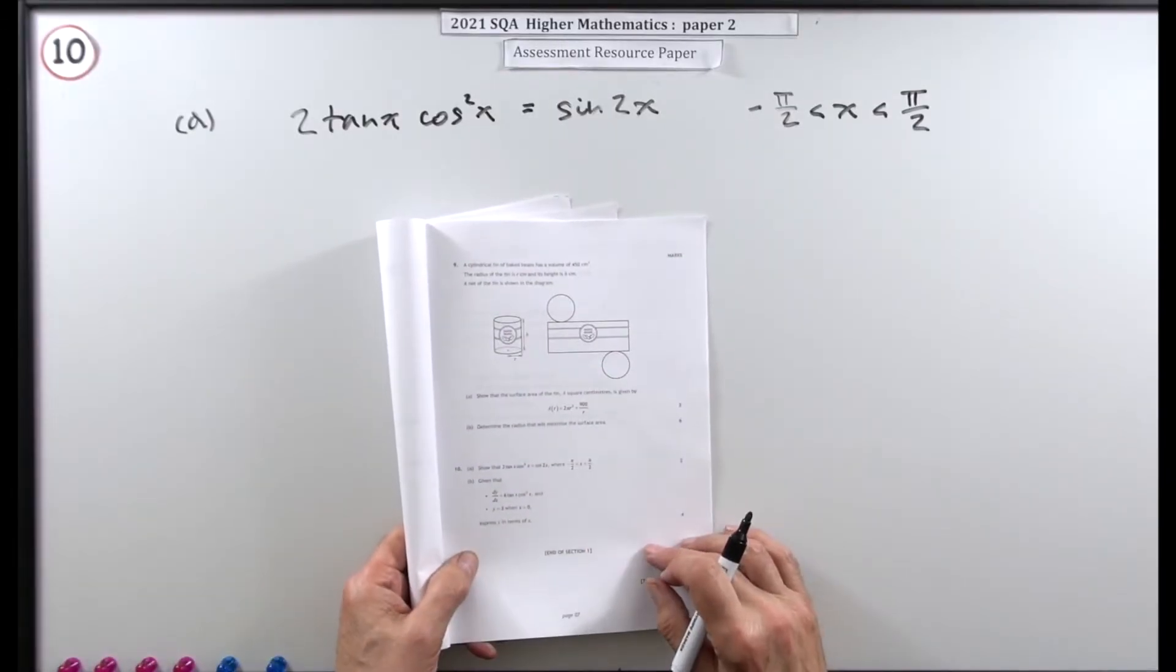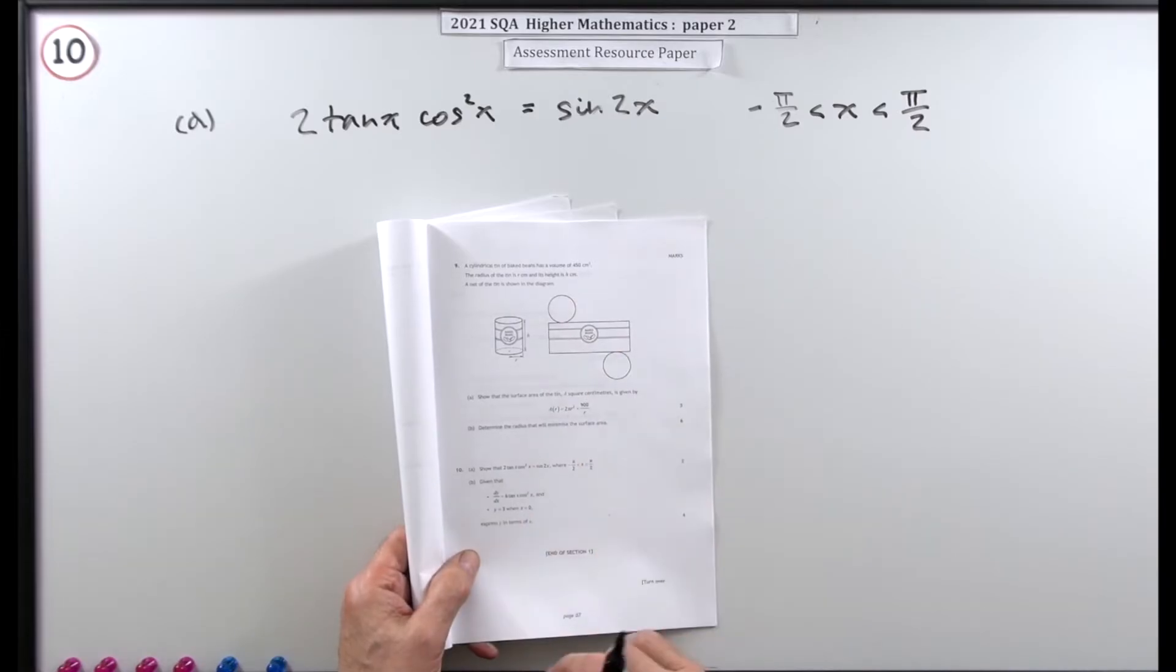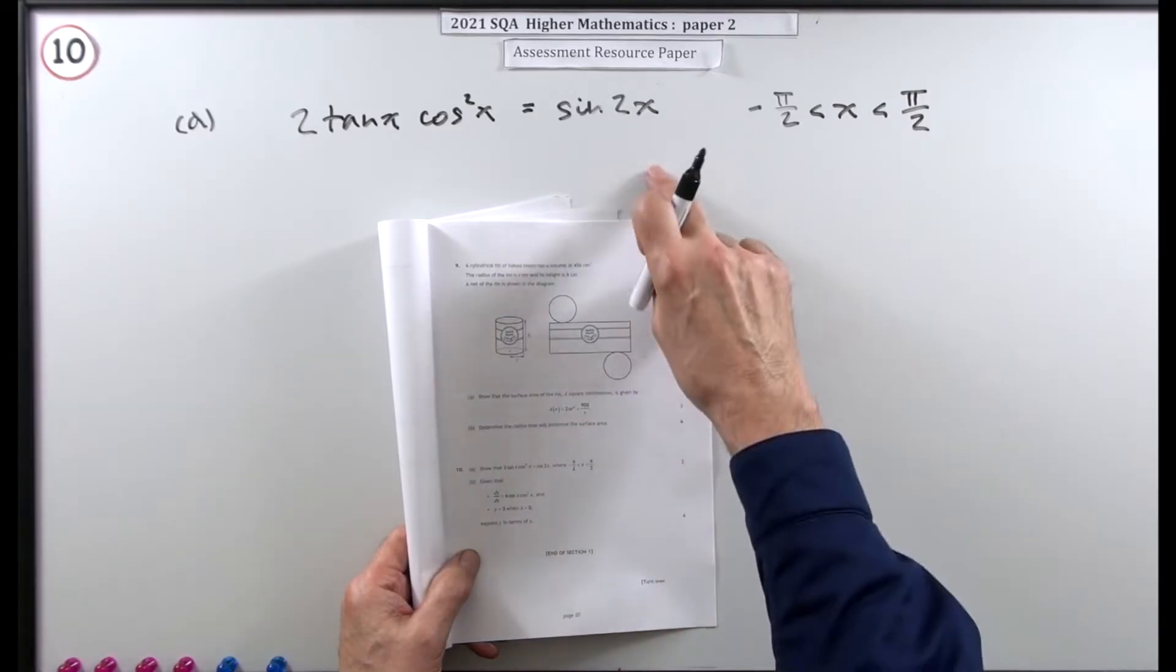Question 10 from paper 2 of the 2021 Higher Maths Resource Paper, six mark question here, trigonometry.